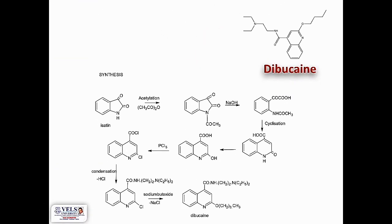Moving on to the synthesis of dibucaine: the starting material is isatin, which on acetylation followed by a series of reactions leads to the formation of dibucaine.